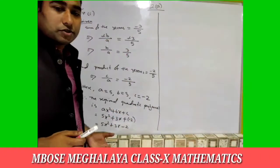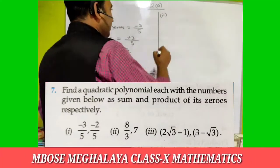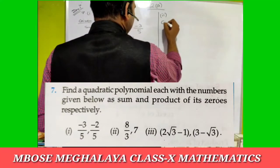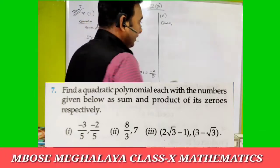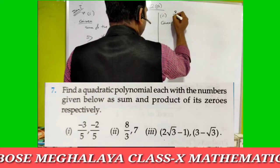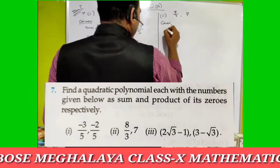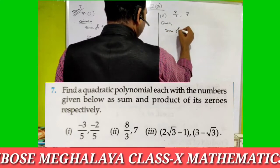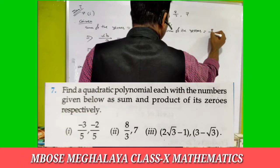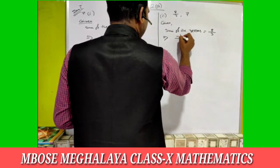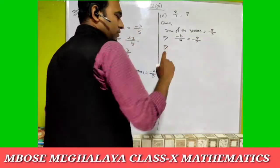I hope all of you understood sub-number one. Now for sub-number two: the given values are sum of the zeros equals eight by three, and the product of the zeros equals seven. The formula is: sum of zeros equals minus b by a, which equals eight by three.